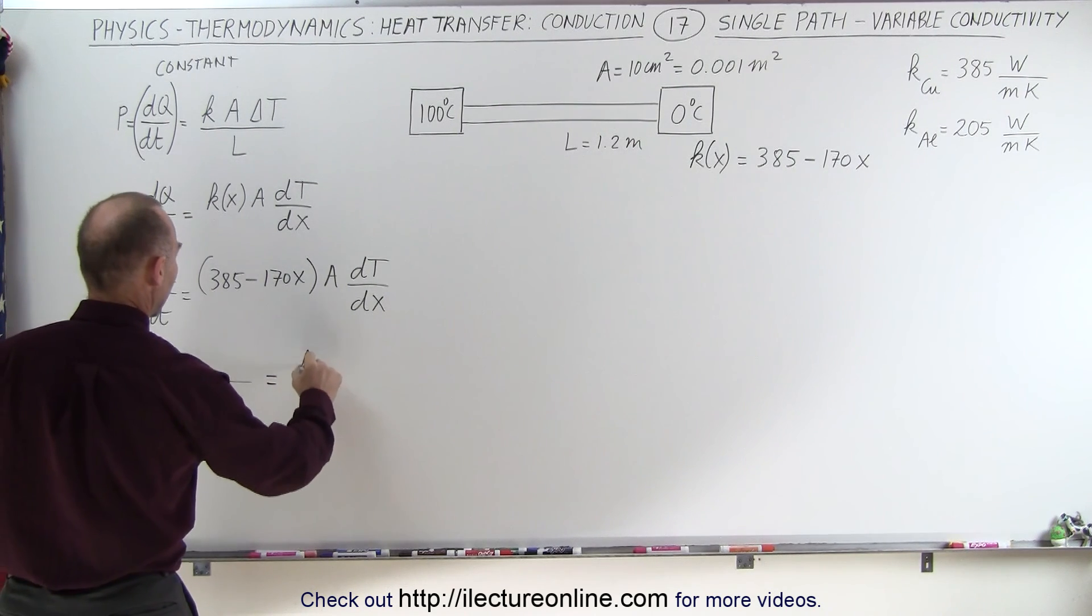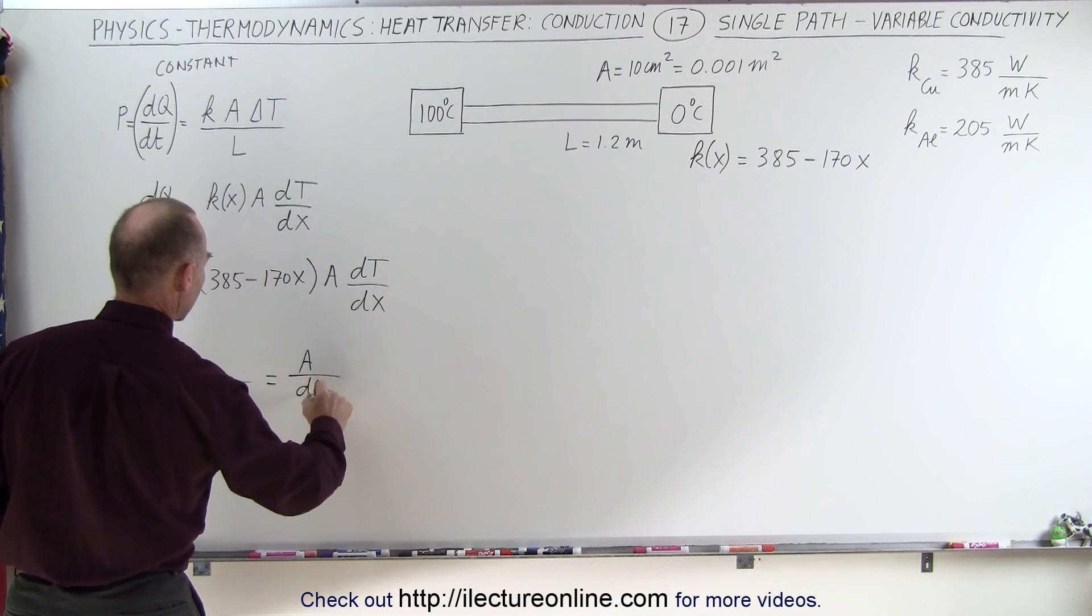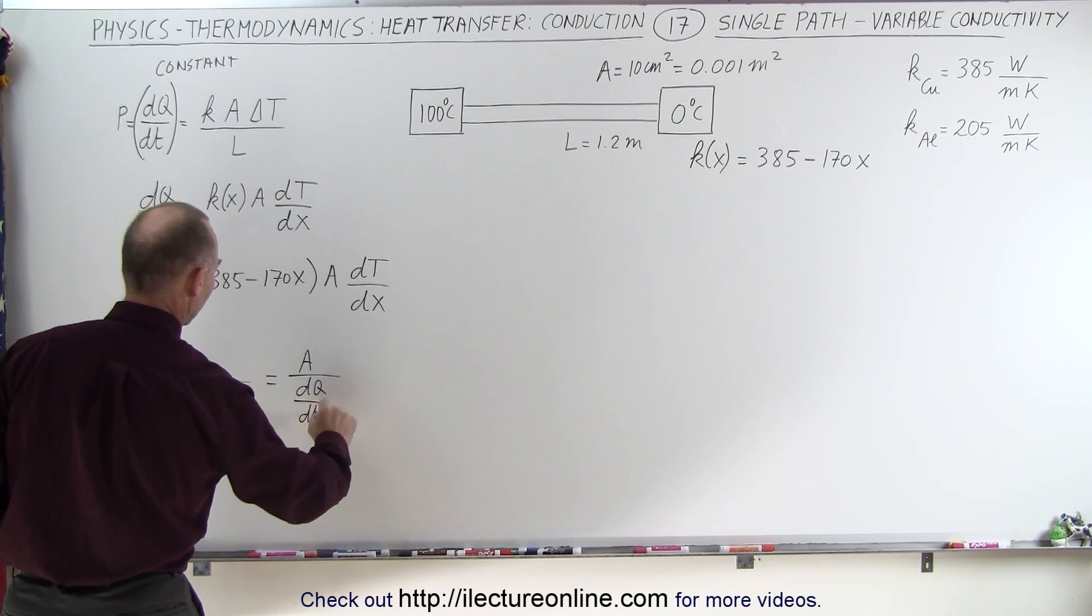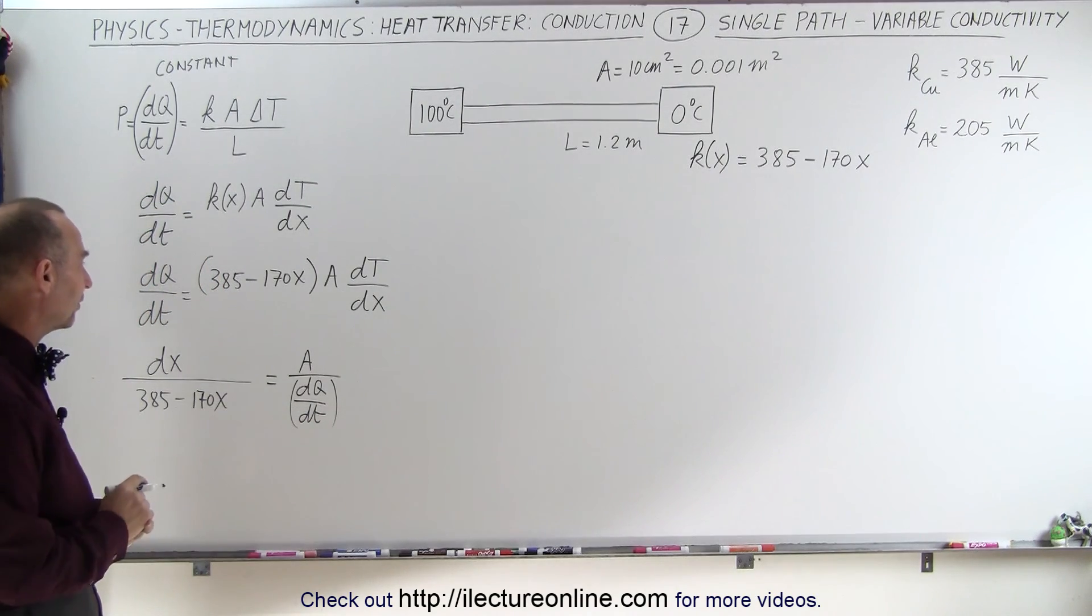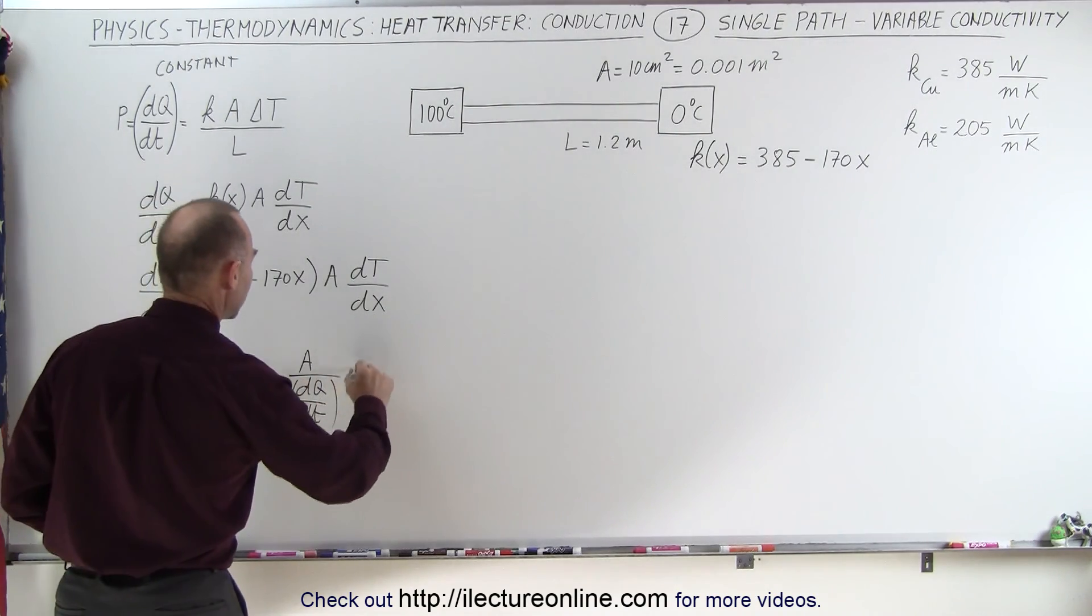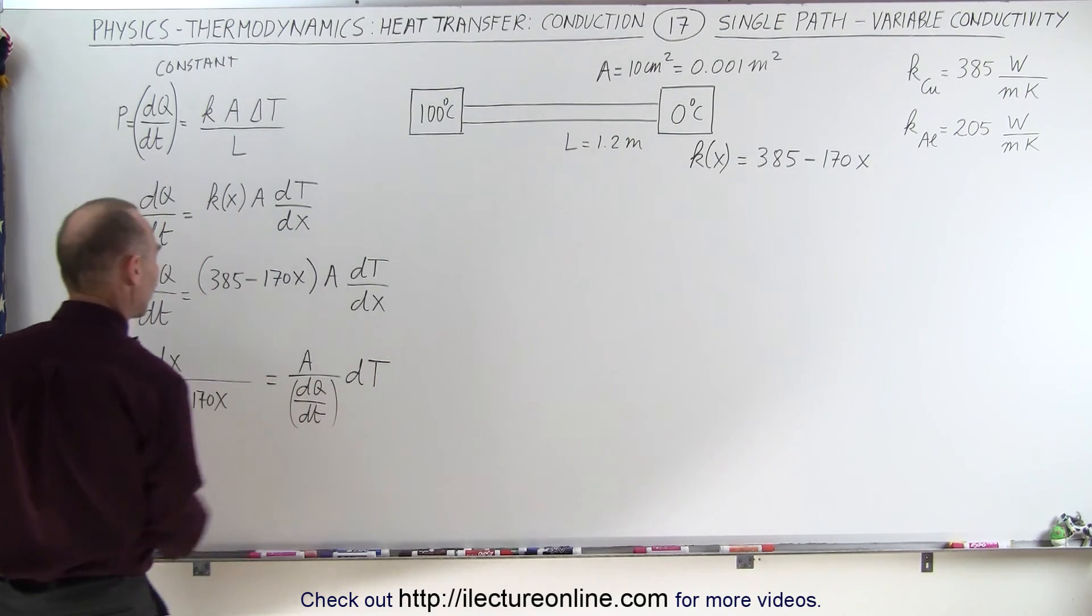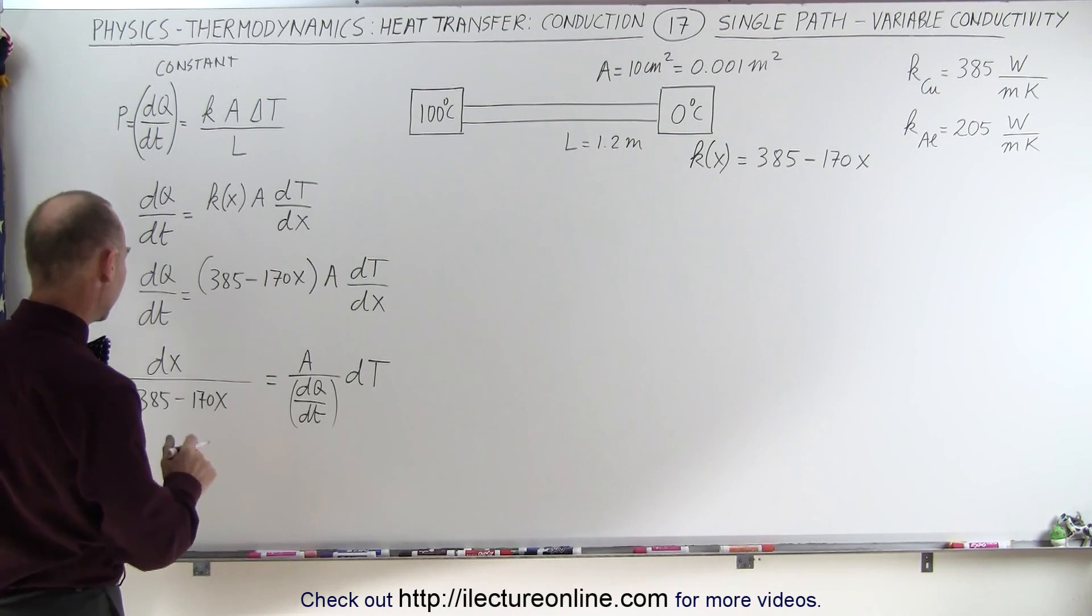On the right side, we end up with A divided by dQ/dt. Both of these are now constants. So this is a constant, that's a constant. Of course, we're looking for the dQ/dt, that's what we're solving for. And then we have the dT, the temperature, on the right side. I believe now we're ready to integrate.